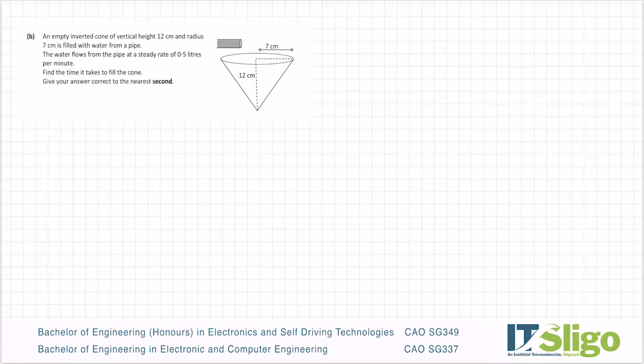If this inverted cone, which just means it's upside down, is filled with water from a pipe, then it is holding a volume of water. So at some stage we will more than likely use one-third πr²h—that's the volume of a cone. So definitely get that formula down and work out your volume.